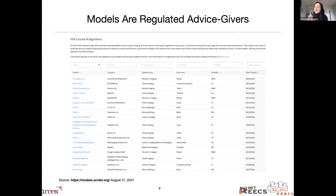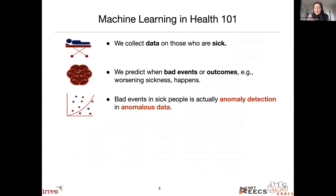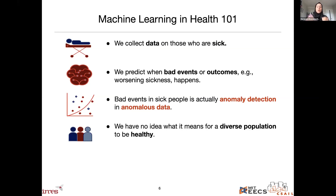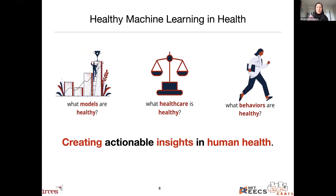However, models are also regulated advice givers. The FDA actually clears AI algorithms to give advice to clinicians as they're performing care. This is really concerning to me because bad events in sick people is actually anomaly detection in anomalous data. If you're sick enough that we're watching you, you're an anomaly. Most of the time, hopefully you're not in an ICU or a hospital. You're asking us to detect an anomaly in data that is already anomalous. This is really hard technically — we're working in a space where we don't know what normal looks like, what a diverse population looks like when they're healthy. So the question is, what exactly are we learning?